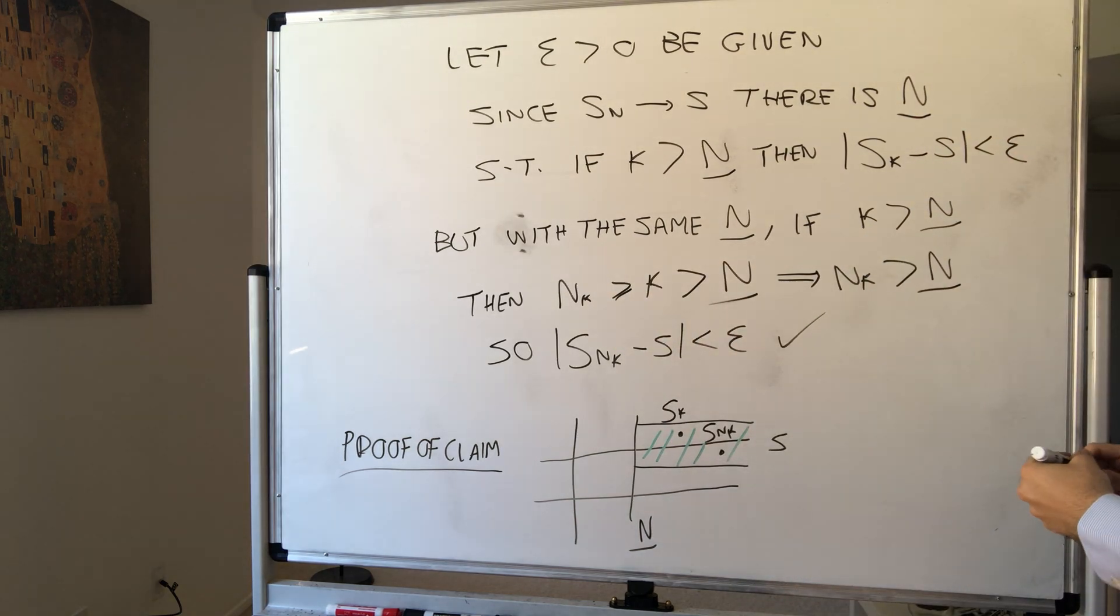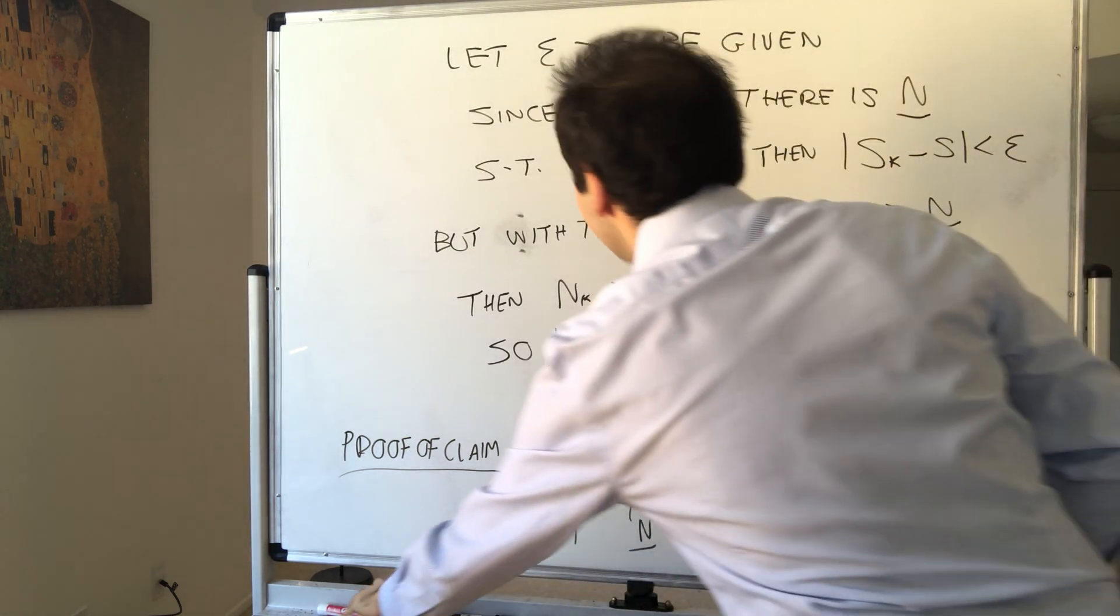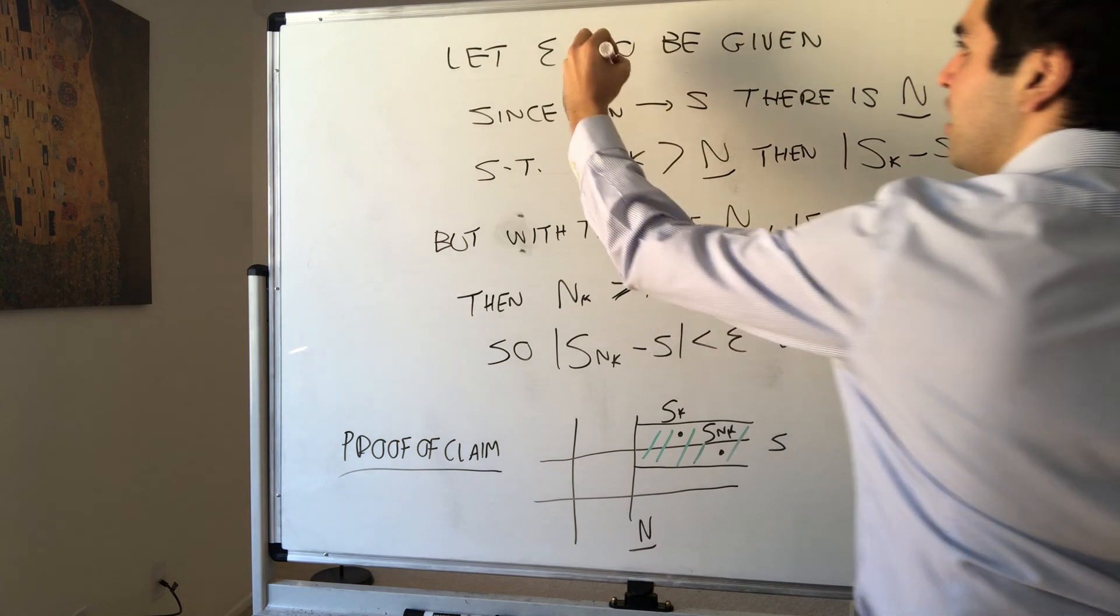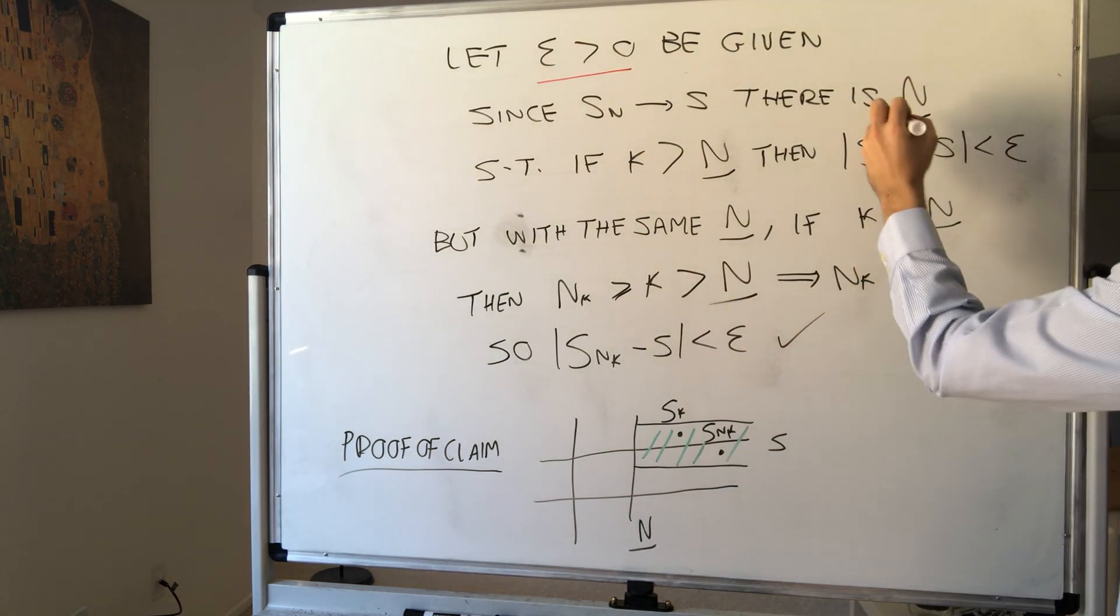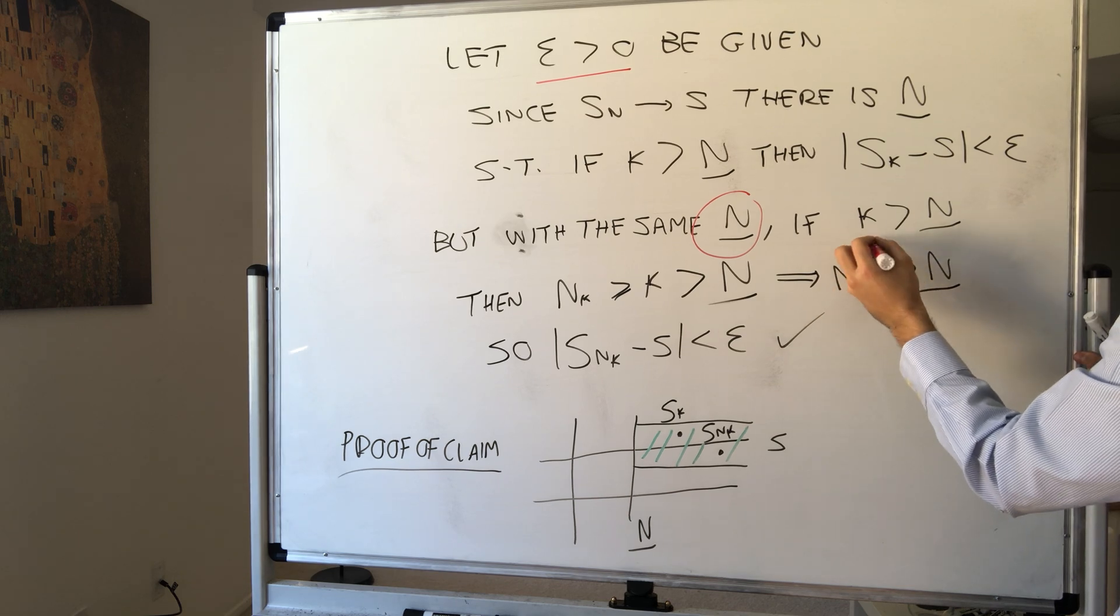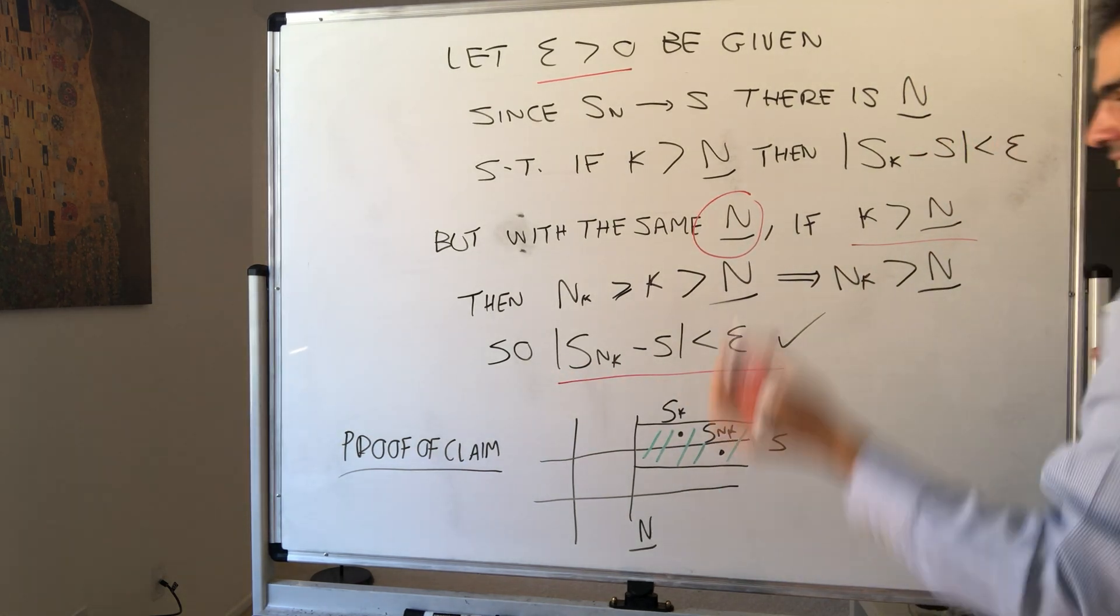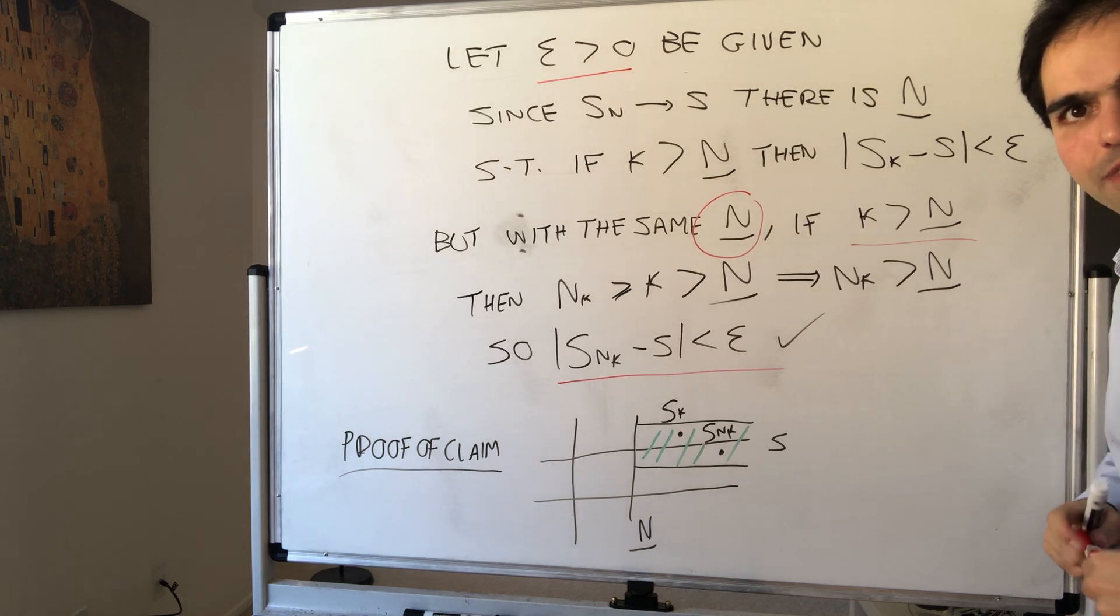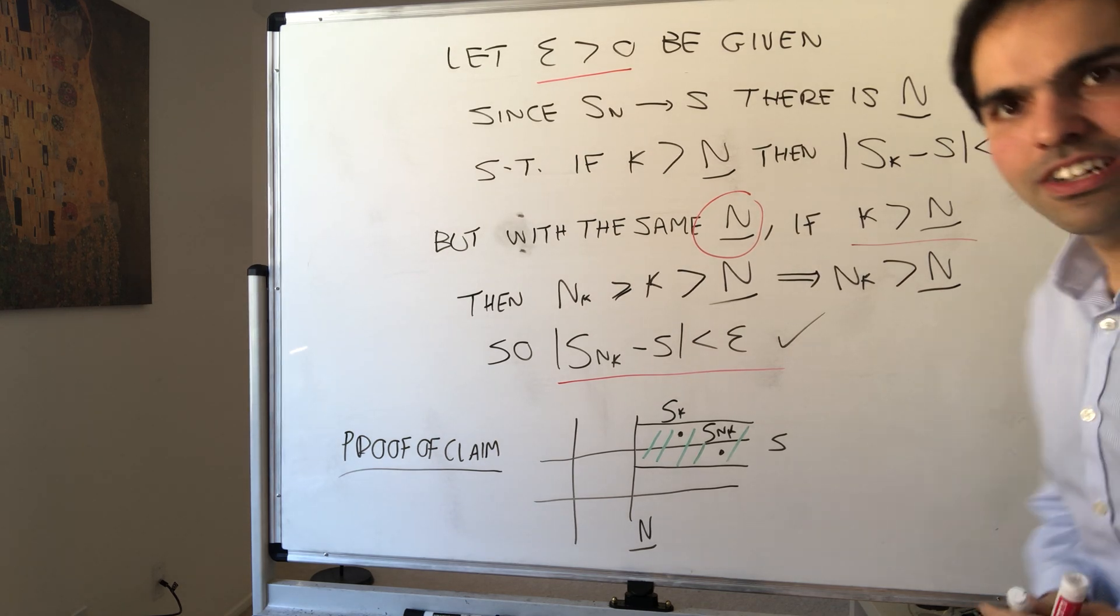And then if you think about it, then we're done, because what did we have to show? We have to show that if epsilon is given, there is some threshold such that if you're after the threshold, then you have Snk minus S is less than epsilon. All right, thank you very much.